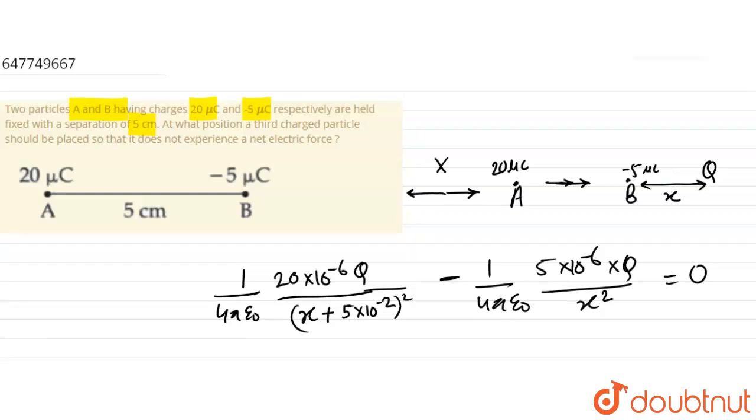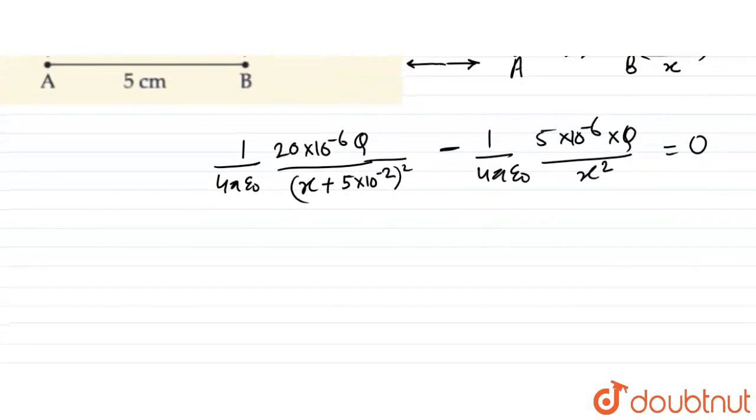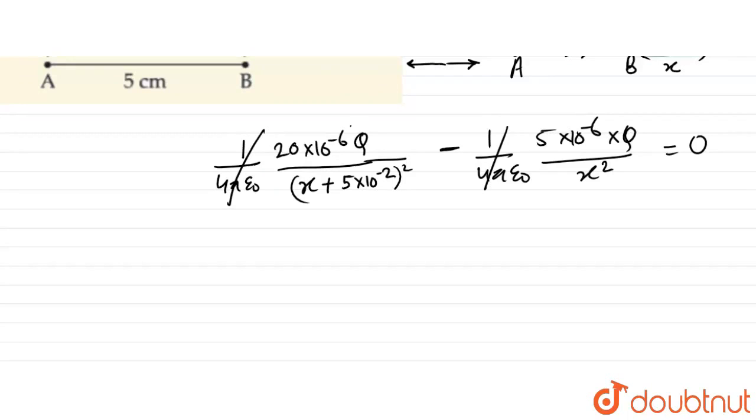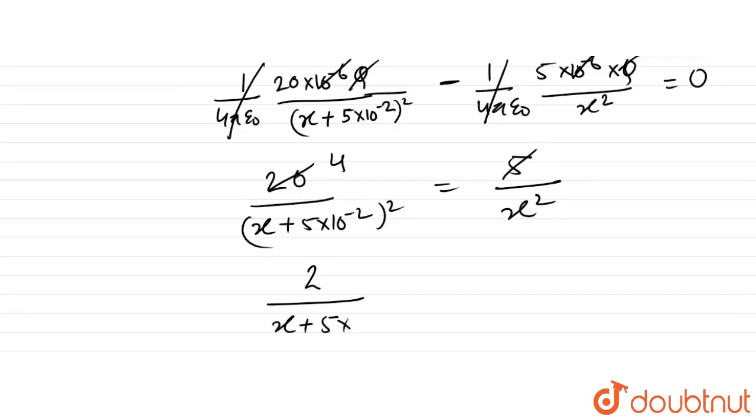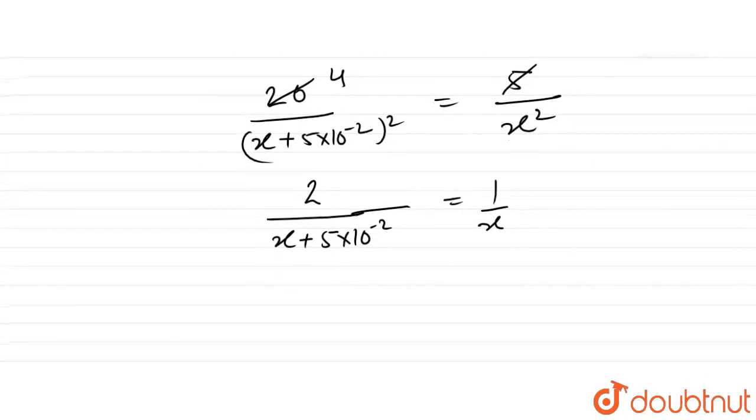Setting these equal: 1 by 4 pi epsilon 0 times Q cancels. We get 20 upon x plus 5 into 10 to the power minus 2 whole square equals 5 upon x squared. Taking square root: 2 upon x plus 5 centimeter equals 1 by x. Cross multiplying: 2x equals x plus 5 centimeter.